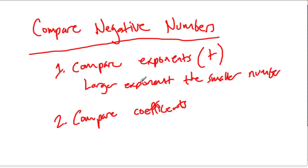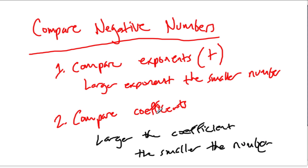So, if we go back to our rules here, the larger the exponent, the smaller the number. And then we compare the coefficients. Same idea here. The larger the coefficient, the smaller the number. Another way of thinking about it is, the larger the coefficient and exponent, the more negative the numbers are. And the more negative they are, the smaller they are.